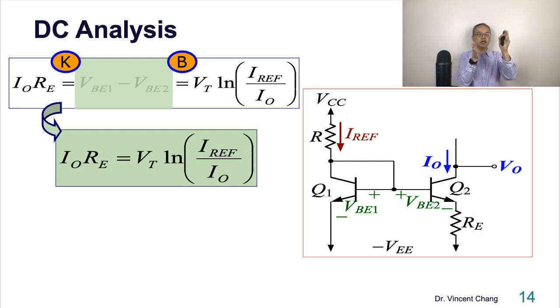For example, left hand side is 1 milliamp, right hand side is 10 microamp, 100 to 1. Remember, IO is much smaller than IREF. And they ask you what kind of RE, then you can solve this. The first exercise is the homework. You can do this after you watch this video.